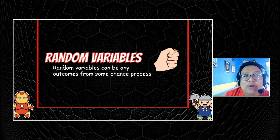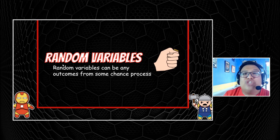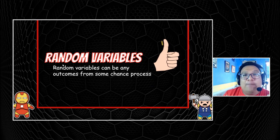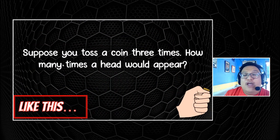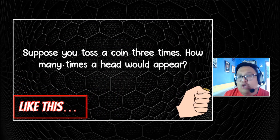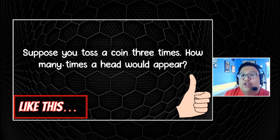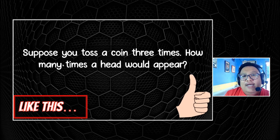That's why it's called random — all results from an experiment are random variables because it is randomized. It's a product of chance, a product of probability and possibilities. When you flip a coin, the result is a random variable. When you toss a die, the result is also a random variable. So, going back to that question — suppose we toss a coin 3 times — all the outcomes are called random variables.